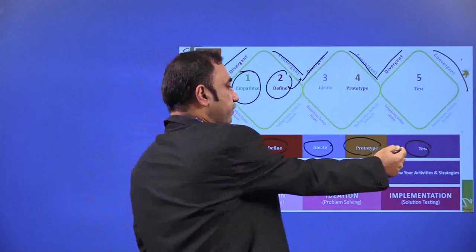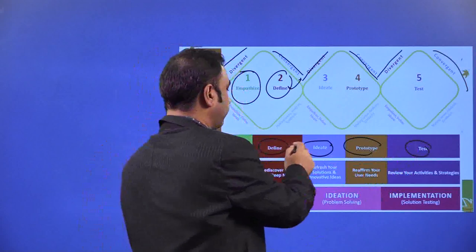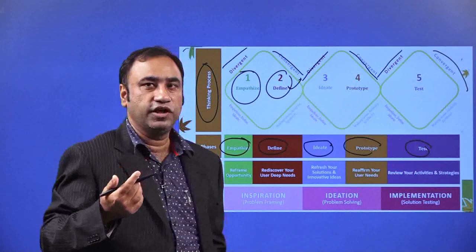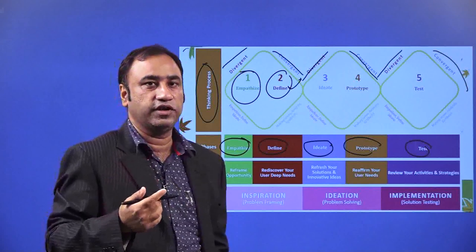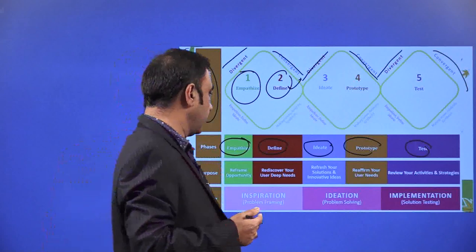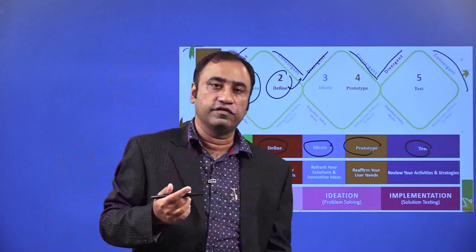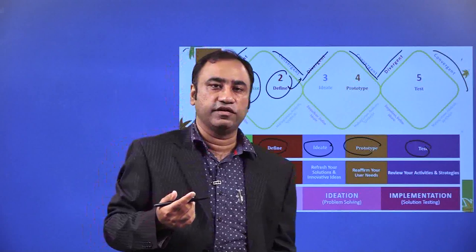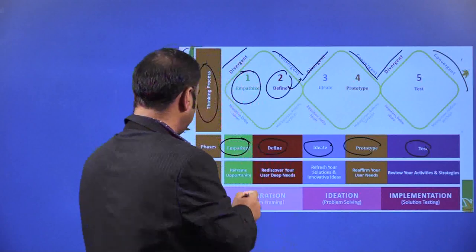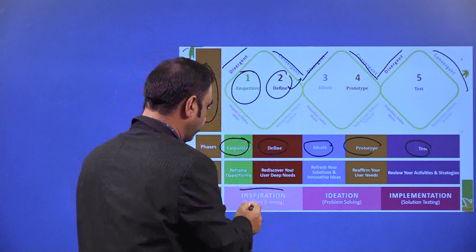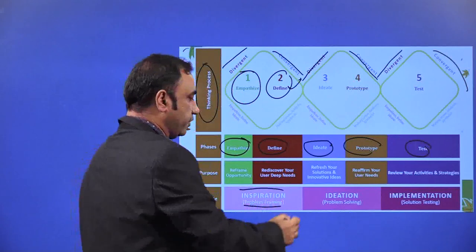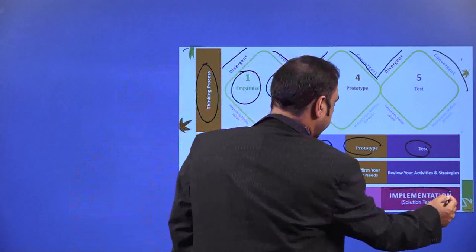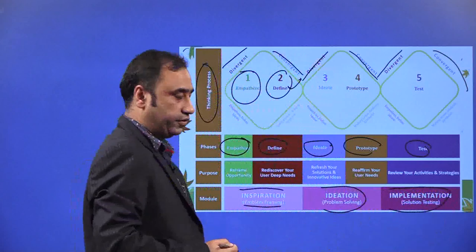If there is some negative feedback, then again we come back to the stage of empathize, define, ideate, prototype — so it's a cycle. It keeps on happening, keeps on changing based on the market feedback, and it's very dynamic and agile in nature. The most important thing in the design thinking process is that it is a team effort — it is the entire team which works together and creates this entire solution. So we go through the process of inspiration where we are framing the problem, then we are in the process of ideation where we are solving the problem, and then the implementation where solution testing is happening.